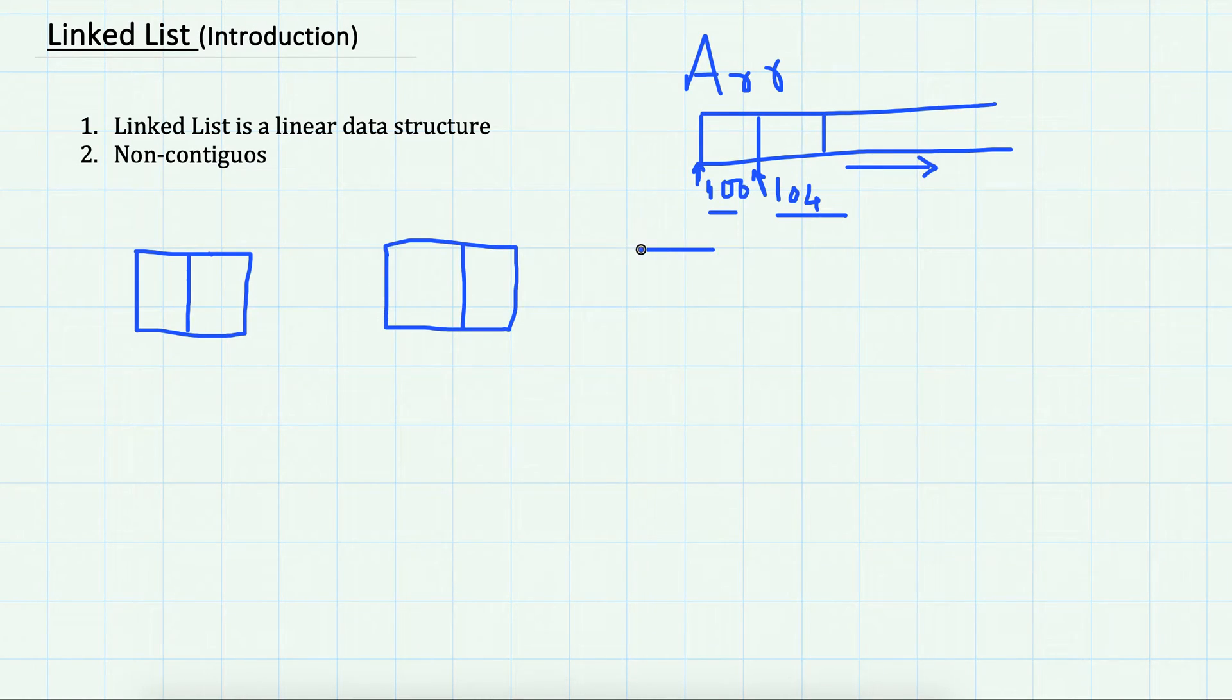These nodes are linked among themselves. Suppose it's a linked list of integers and we have values 1, 5, 7. If this is at address 100, then this may be anywhere in the memory like 310.